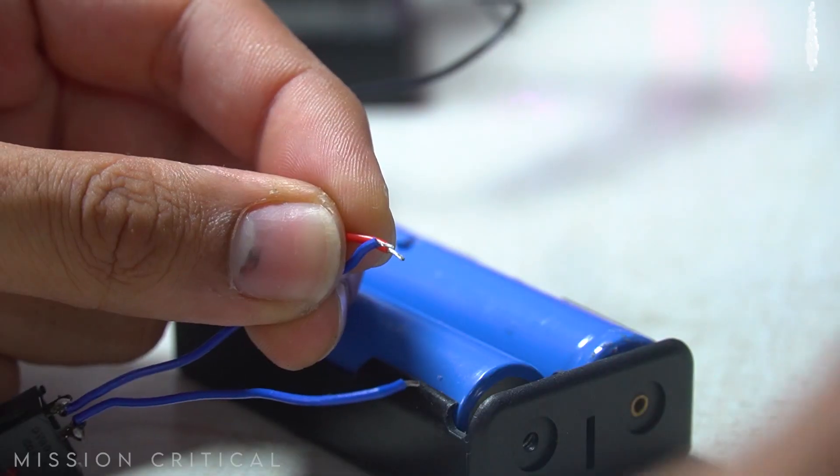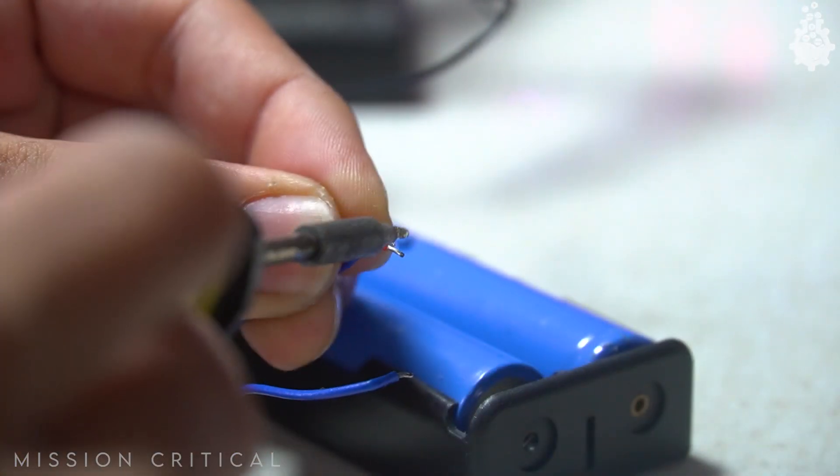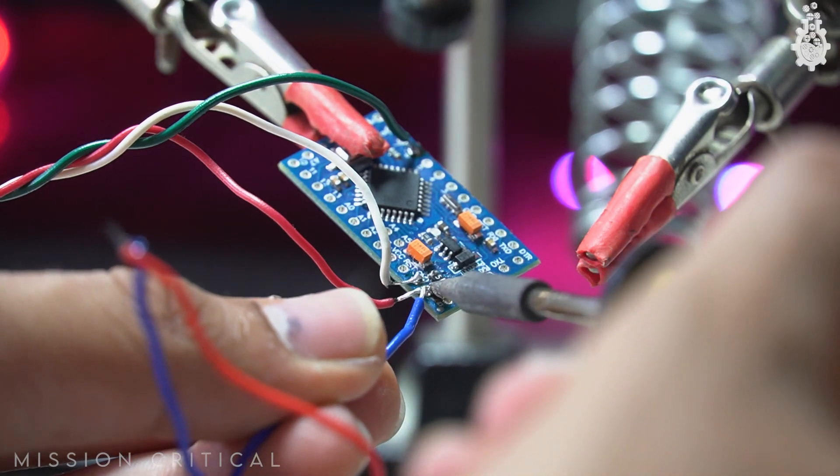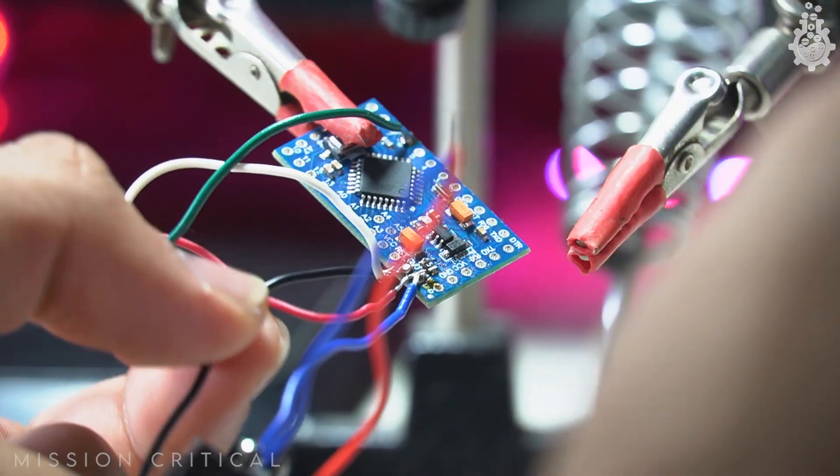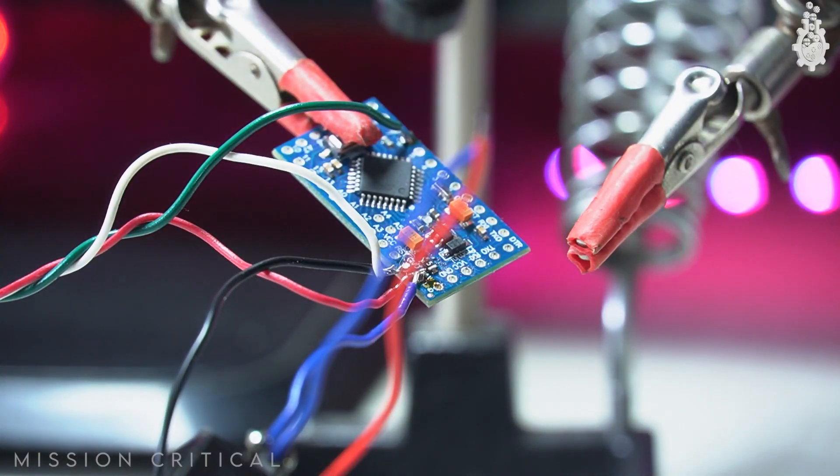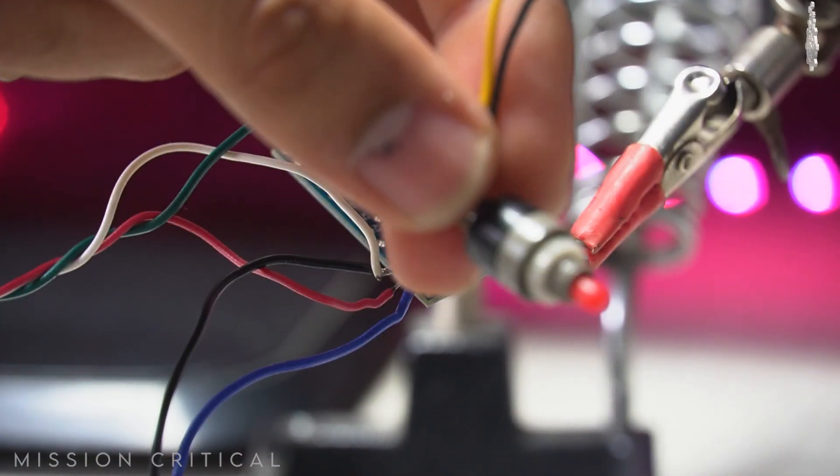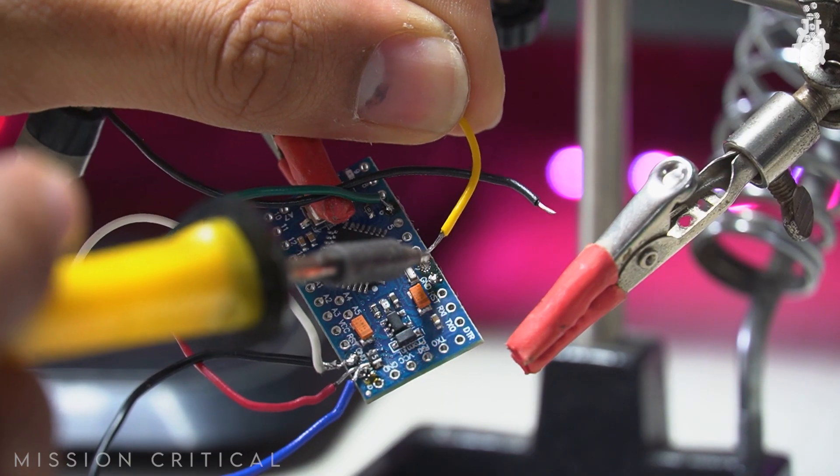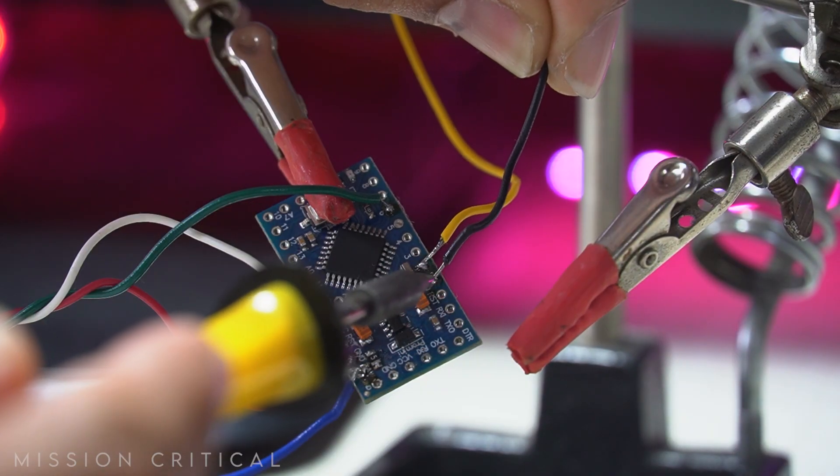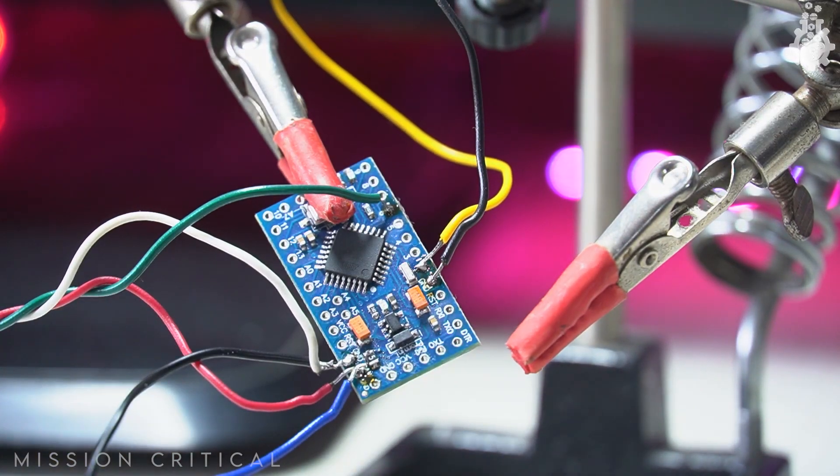We will add the on off switch between the positive of our battery and RAW of Arduino. And we will connect the negative of battery to GND. At last we will solder one push button to D2 and the other end of the push button should be connected to the GND which we will use for mode switching.